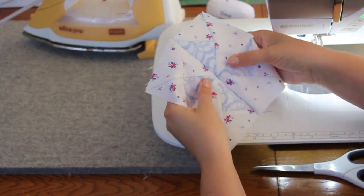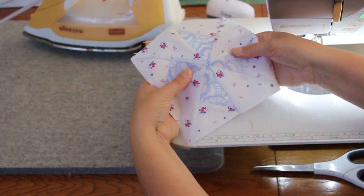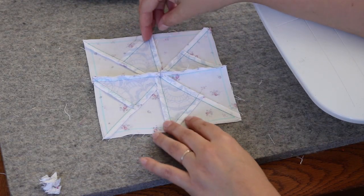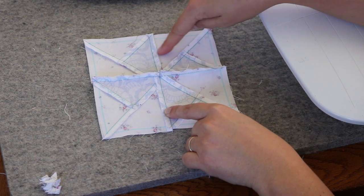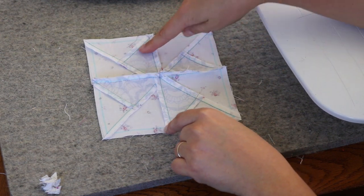How do we do on that center point? That's pretty darn close to perfect. So now I need to press my seams on the back, we're spiraling those seams. I've got this one going this direction, this one going this direction, so I'm going to go clockwise on all my seams.